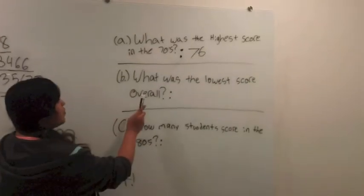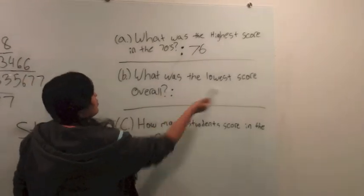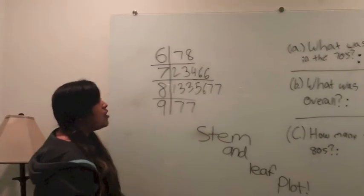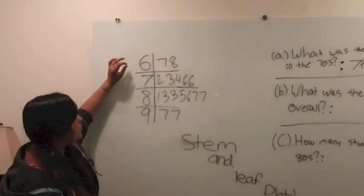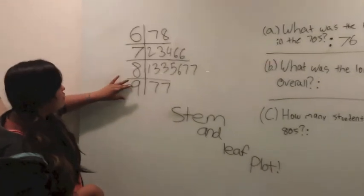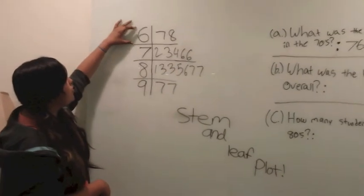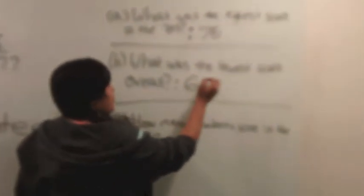The next problem or question is what was the lowest score overall. So if you go back to the plot, we would go from the highest to the lowest. Since 9 or 90 would be the highest, we go to the lowest, then this one would be 67. So we would put 67 right here.